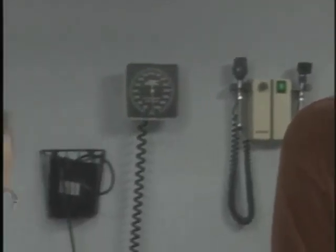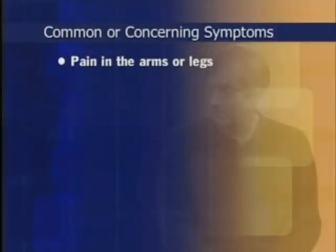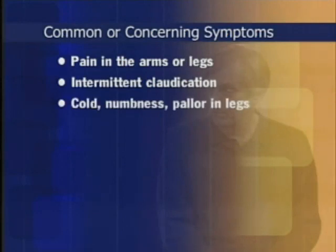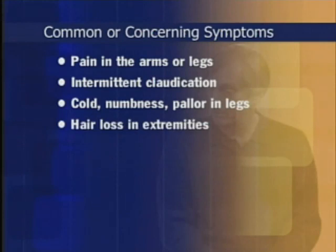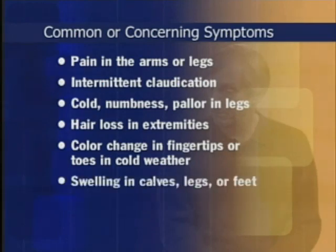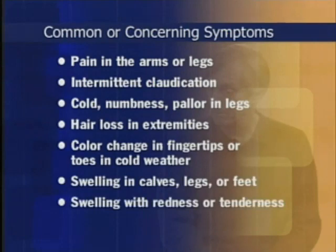In either case, you will record the patient's chief complaint along with common or concerning symptoms. Common or concerning symptoms relating to the peripheral vascular system include pain in the arms or legs, intermittent claudication, cold, numbness or pallor in the legs, hair loss in the extremities, color change in fingertips or toes in cold weather, swelling in calves, legs or feet, and swelling with redness or tenderness.